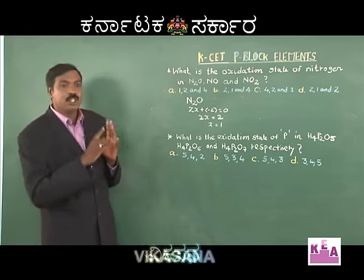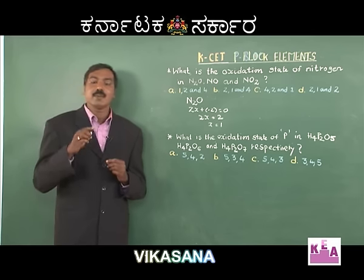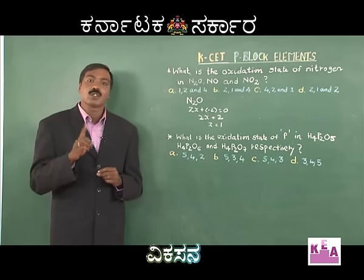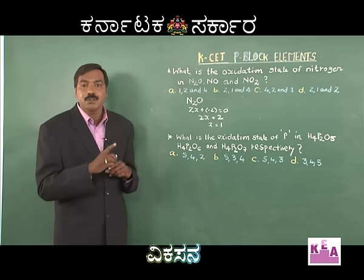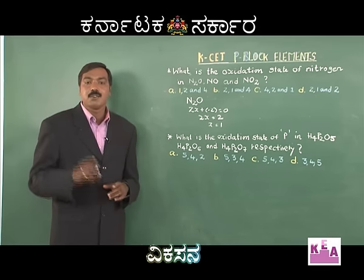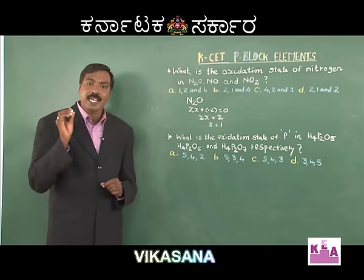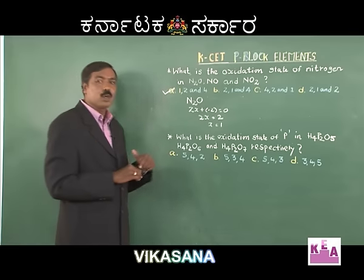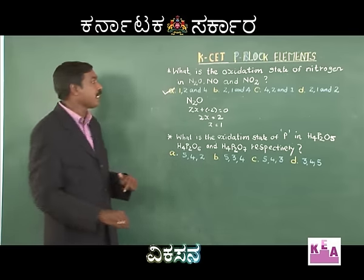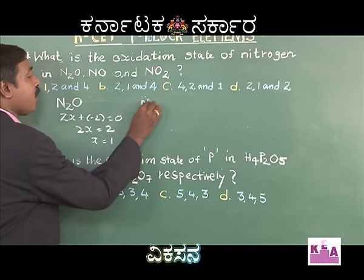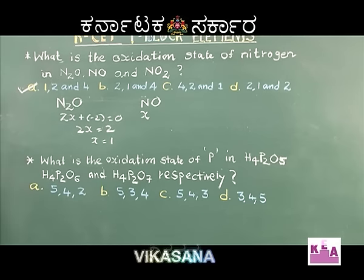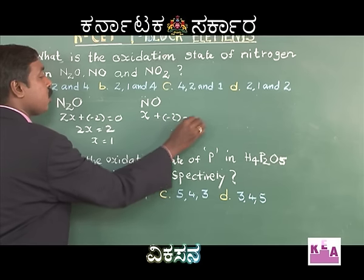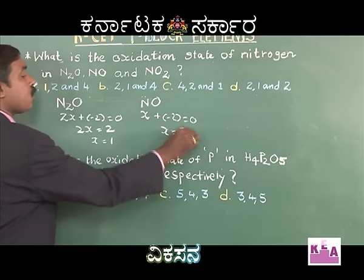As I look at the options A, B, C, and D, I understand that option A has +1 and none of the other options begin with 1. Therefore, the most relevant answer is option A. But let me also show you how to solve the remaining ones. For nitric oxide (NO): x + (-2) = 0, so x = +2.